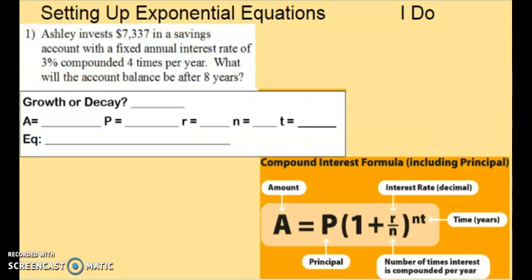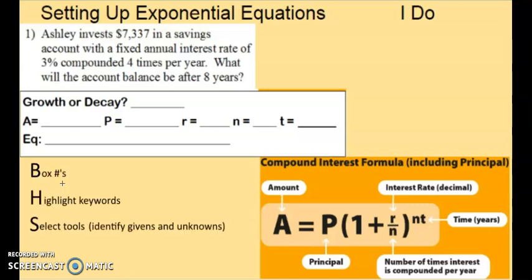Let's go over one more example. Setting up exponential equations. Ashley invests $7,337 in a savings account with a fixed annual interest rate of 3% compounded four times per year. What will the account balance be after eight years? So let's follow our BHS steps. So first we're going to box the numbers. We have $7,337, 3%, and four times per year, and eight years. So we're going to box the numbers.